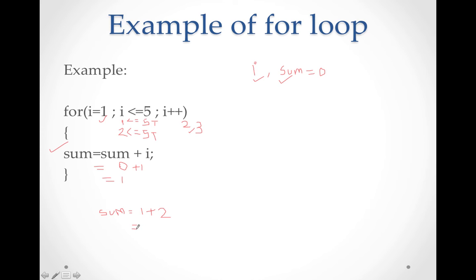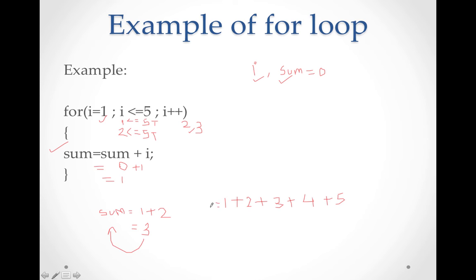The updated value of sum is 1, so sum equals 1 plus 2 equals 3. In this way, you execute 1 plus 2 plus 3 plus 4 plus 5. After the last step using the for loop, the total you will get is 15.